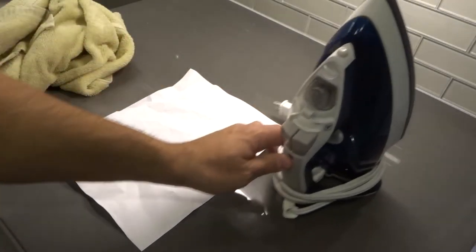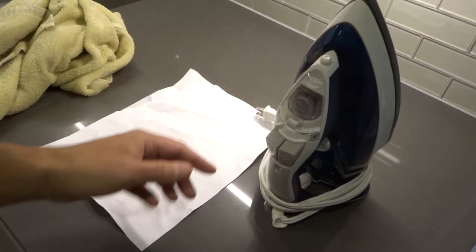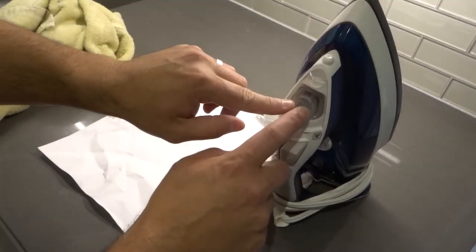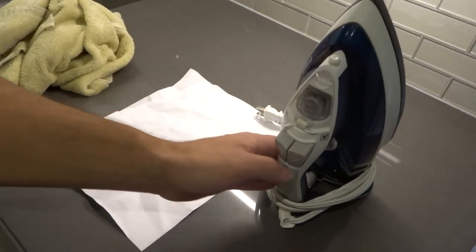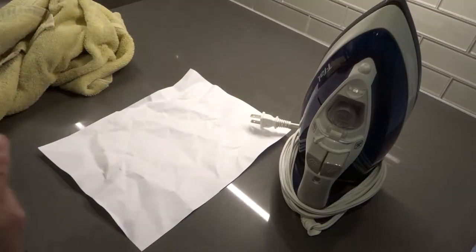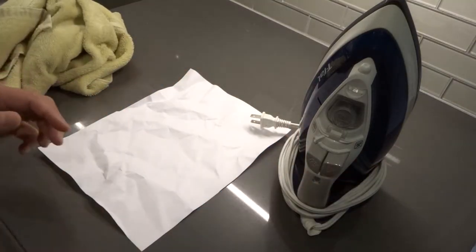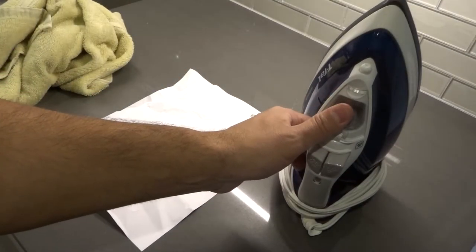So essentially what you want to do is get an iron and plug it in. Make sure it has water in the reservoir and turn it to a very low heat setting. I'm not going to go and plug this in, I'm just telling you what to do. You want to have it at a low heat setting and make sure there's water in the reservoir.